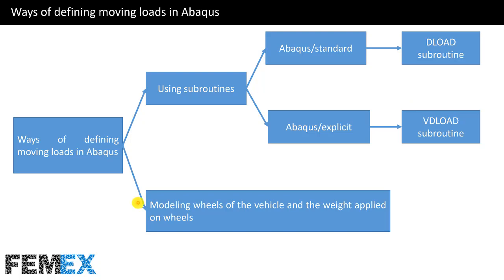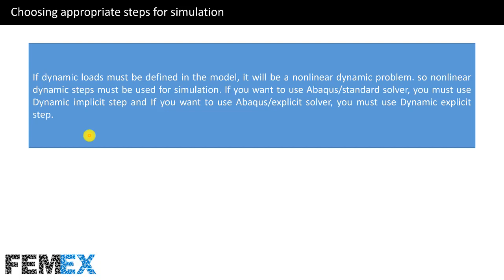In the second method, no subroutine is used — we model the wheels of the moving vehicle and apply loads on the wheels. Now I want to talk about choosing appropriate steps for simulation. If dynamic loads must be defined in the model, it will be a non-linear dynamic problem, so non-linear dynamic steps must be used.